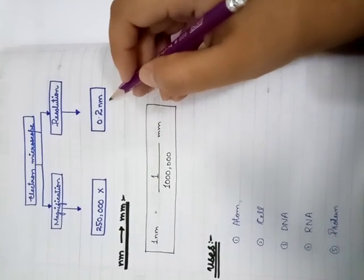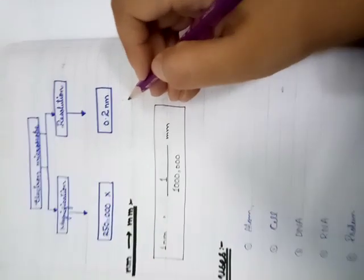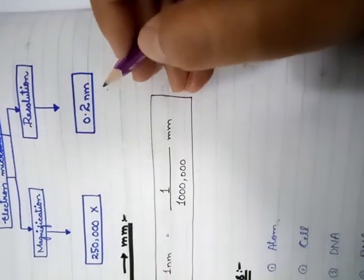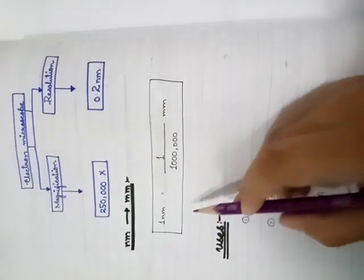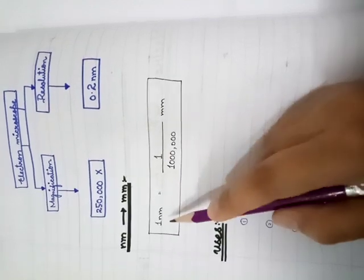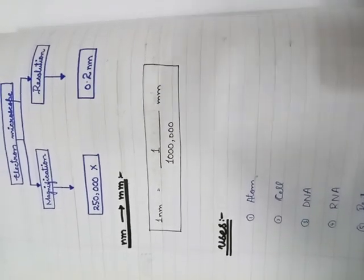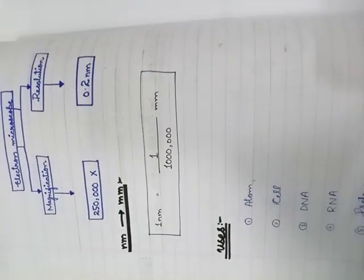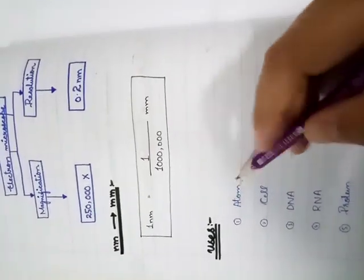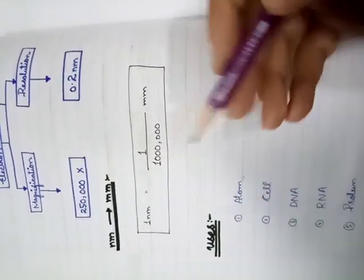This is very small. For example, this is a dot. If you zoom in, you can see it, but 0.2 nanometer is very small. 1 nanometer equals 1 by 100,000 millimeter. This is an MCQ. Electron microscope uses this to see atoms, cells, DNA, RNA, protein. This is a cell within the structure, this is a detail. This is the use of electron microscope.